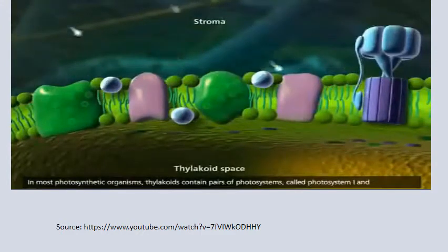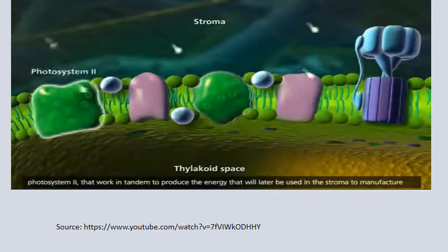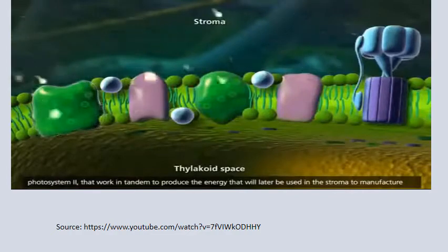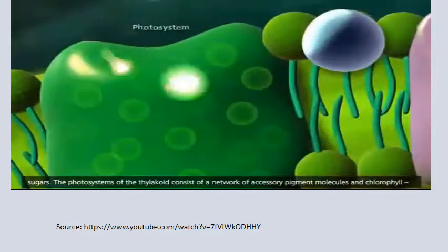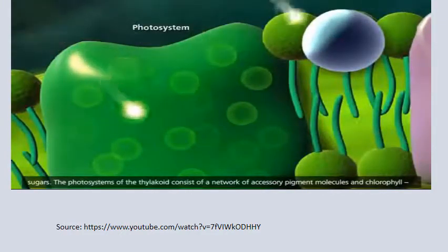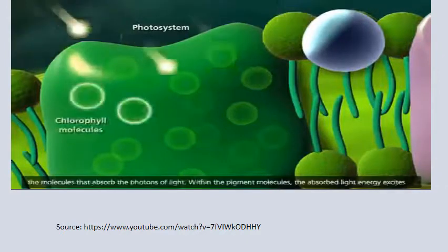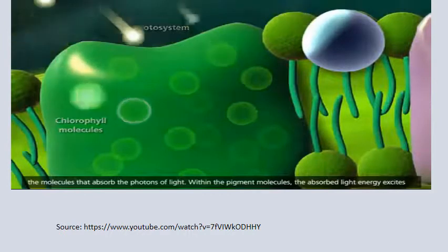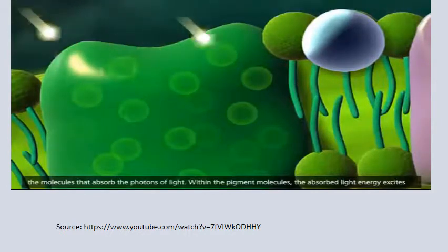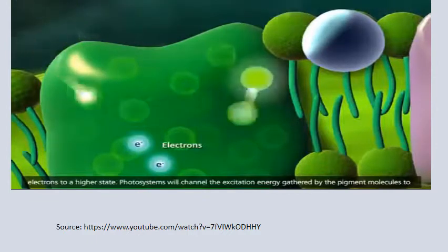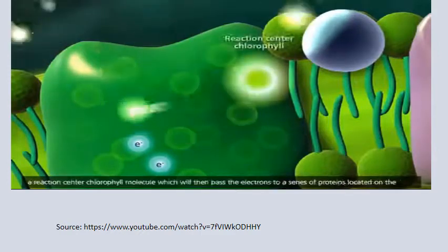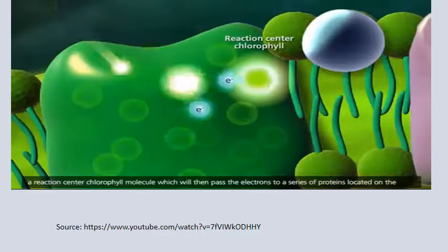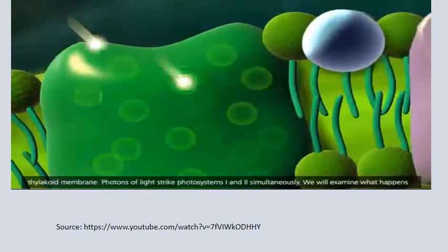In most photosynthetic organisms, thylakoids contain pairs of photosystems — photosystem 1 and photosystem 2 — that work in tandem to produce energy used in the stroma to manufacture sugars. The photosystems consist of a network of accessory pigment molecules and chlorophyll that absorb photons of light. The absorbed light energy excites electrons to a higher state, which are then channeled to a reaction center chlorophyll molecule and passed to proteins on the thylakoid membrane.